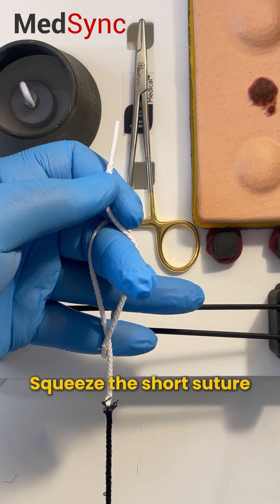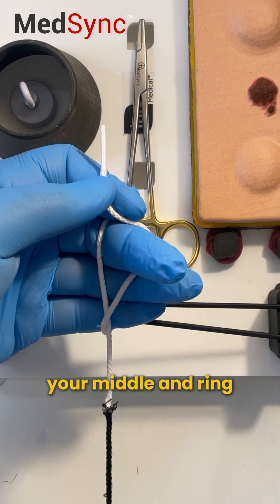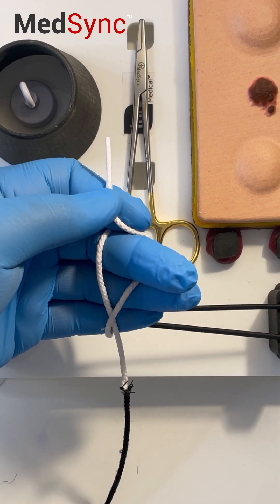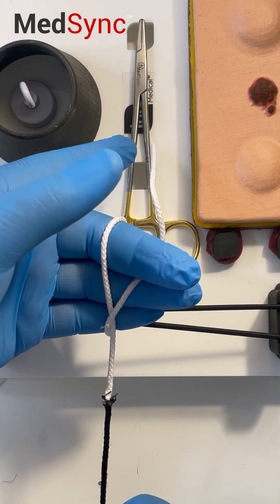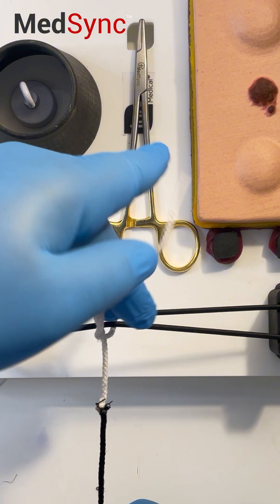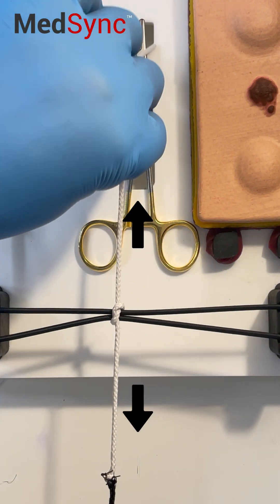Squeeze the short suture between your middle and ring. You now let go between your thumb and index and pull the short suture between the loop.